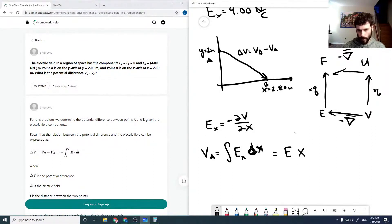This is E_X_A times X_A plus some constant. That constant just comes from the fact that I haven't necessarily said where our zero of potential is.